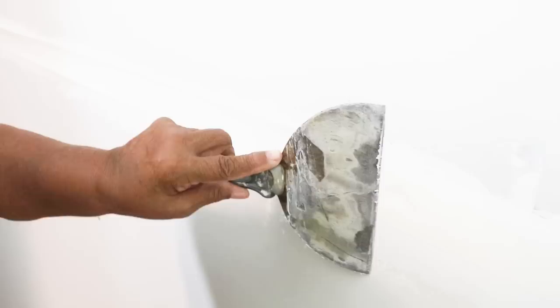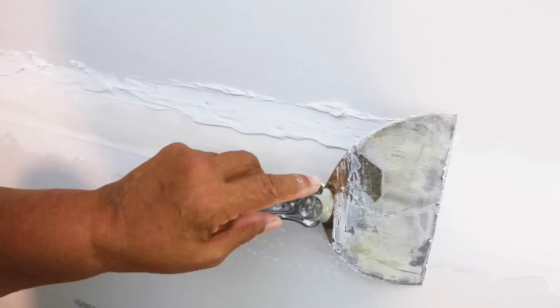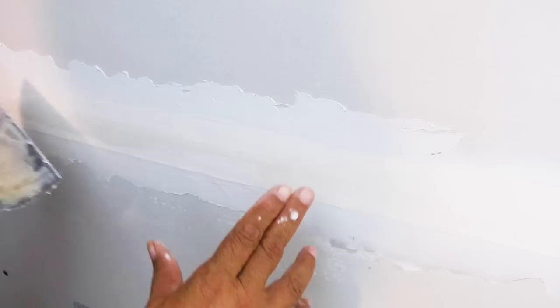Once you have the tape embedded, you can continue on in the opposite direction. What you want to do is apply firm pressure but not so hard that you squeeze out all the joint compound, because then you get mud starvation and the tape won't adhere in the way that you want it to. You get blistering. You want your bedding coat to be the heaviest coat you apply. You may feel the need to taper the edges a little bit. That's tapered and that's going to promote less sanding.